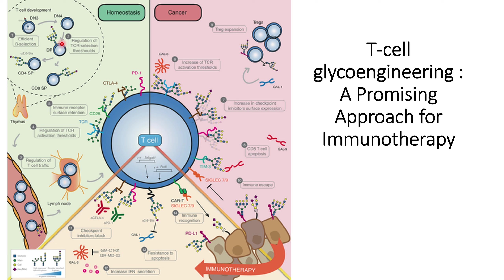During beta selection, complex glycan structures on the double negative T cells are important. When T cell receptor rearrangement occurs and the cells now express both CD4 and CD8 receptors, they start to express complex glycan structures. This is how the machinery within the thymus recognizes these double positive T cells.